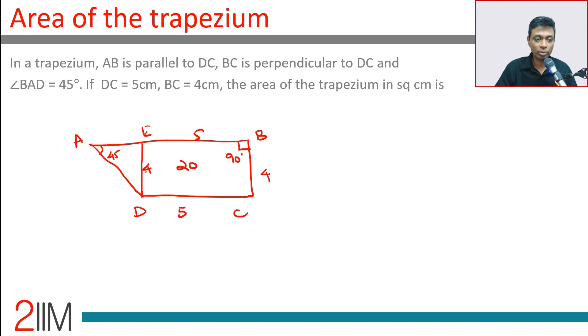After this, it's a walk, because the moment you know this is 45 degrees, it's an isosceles right triangle. This is 4, this is 4, this area is half into 4 into 4, which is 2 into 4, 8 units.